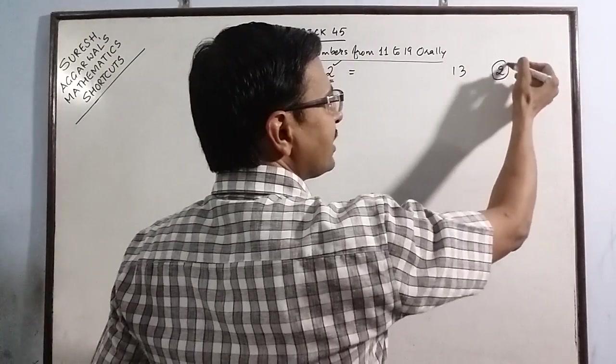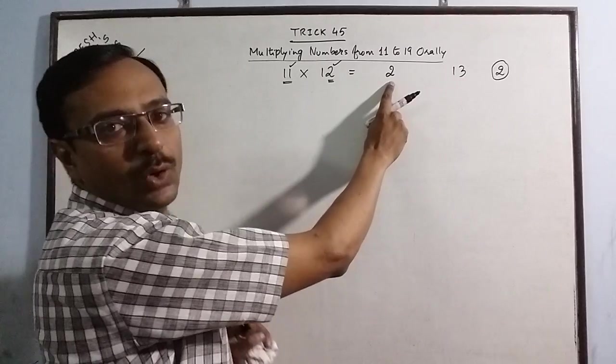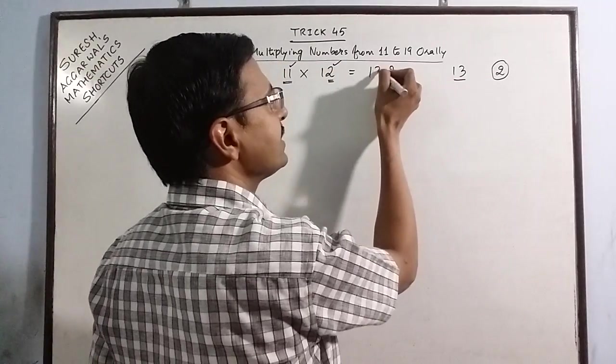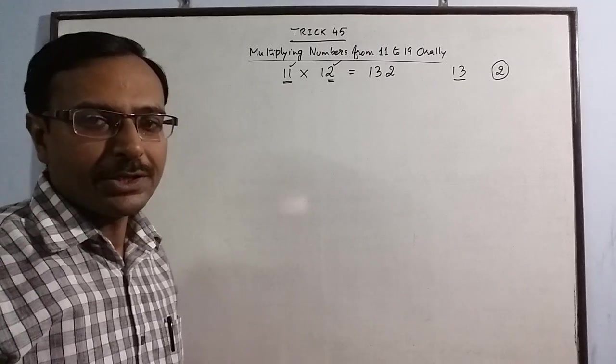This is a single digit number. So this single digit comes in the units place of the product and this number will come here as it is. So 132 is the product.